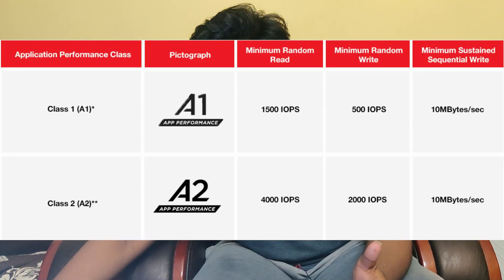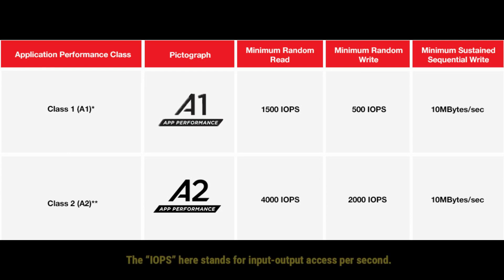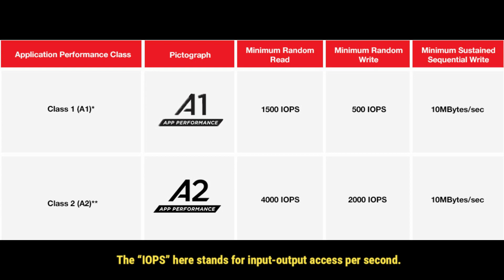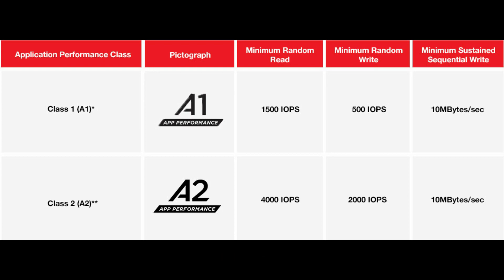Friends, you may also see A1 or A2 ratings on a memory card. These ratings indicate the speed at which apps can be stored, installed, and run from the card. A1 has 1500 IOPs read speed and 500 IOPs write speed. A2 has 4000 IOPs read speed and 2000 IOPs write speed.